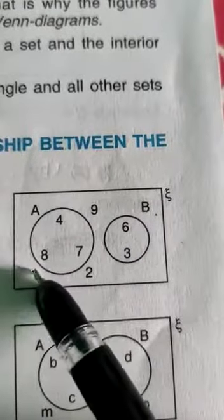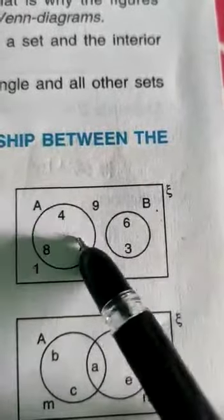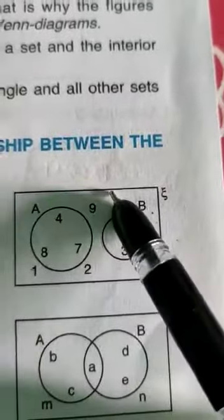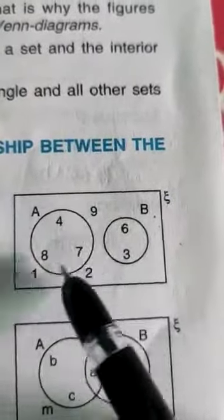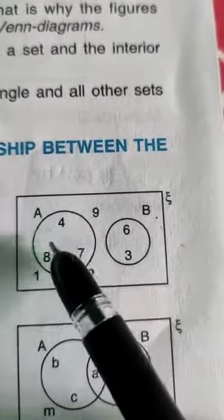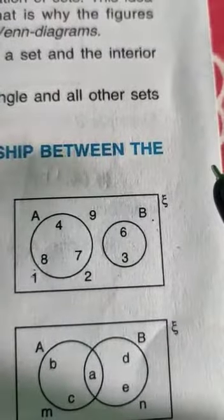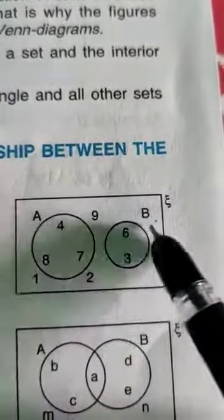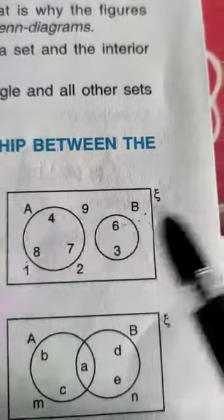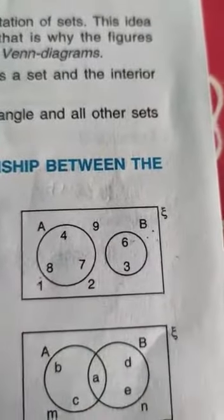This is one, two, all the elements contain in this set, inside and outside. The outside element is inside the rectangle, that is universal and this is the set A. Inside set A, four, seven, eight. Inside set B, six, three. So what is disjoint, which is not common. So there is no any common element children, that is disjoint set. This is the figure.